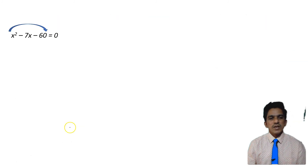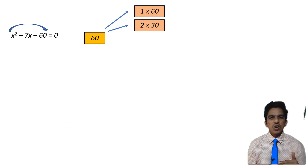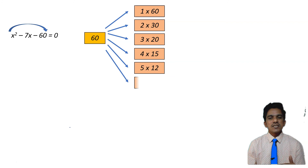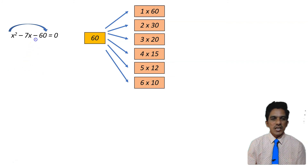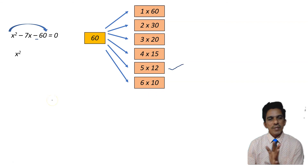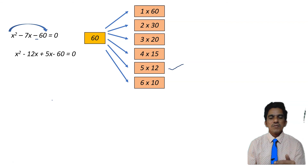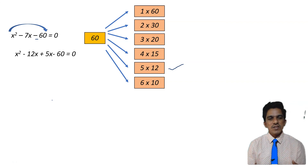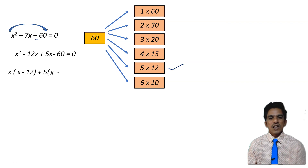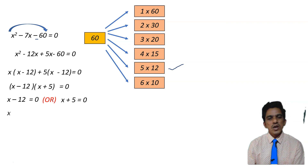So the quadratic equation to solve is x squared minus 7x minus 60 equals 0. The coefficient of x squared is 1 and 1 into 60 is 60. Factors of 60: 3×20, 4×15, 5×12, 6×10. Since the constant is negative, we need factors whose difference is 7. The pair 5 and 12 has a difference of 7. Splitting minus 7x as minus 12x plus 5x: x squared minus 12x plus 5x minus 60 equals 0. Grouping: x(x minus 12) plus 5(x minus 12) equals 0, giving (x minus 12)(x plus 5) equals 0. Therefore x equals 12 or x equals minus 5.